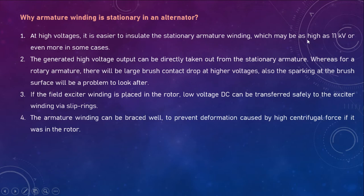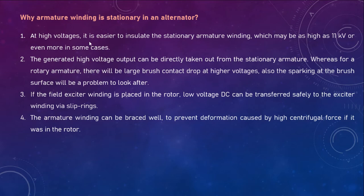The first advantage: at high voltages it is easier to insulate the stationary armature winding, which may be as high as 11 kilovolts or even more in some cases. Since it is a three-phase AC generator, very high voltage is given as output. If the armature were placed in the rotor, insulating the rotating armature would be very difficult. For that reason it is placed in the stator side, making installation easier.